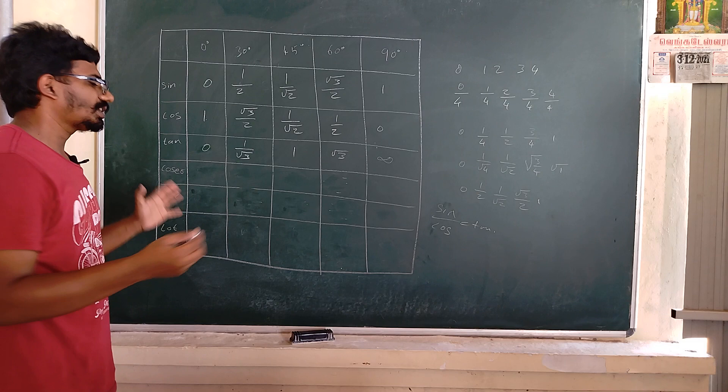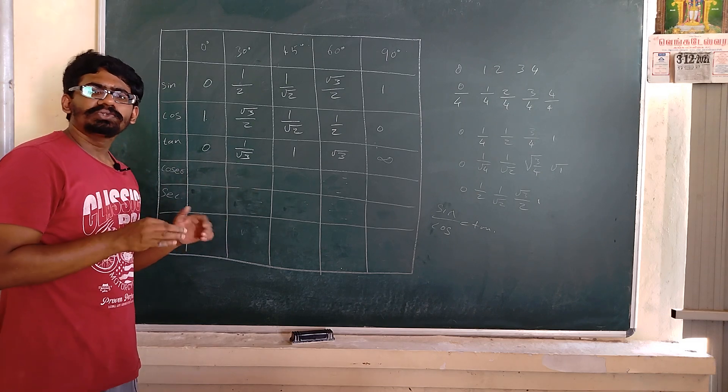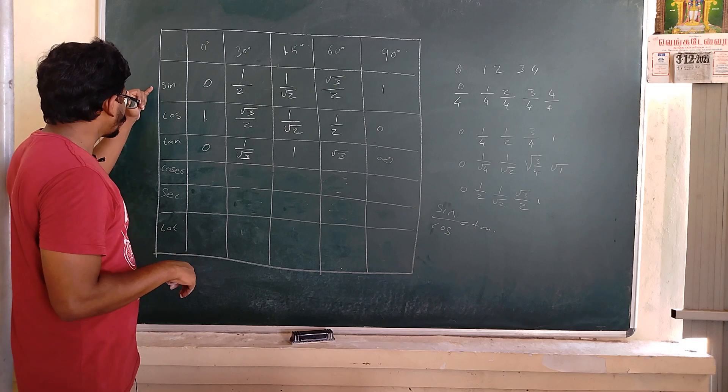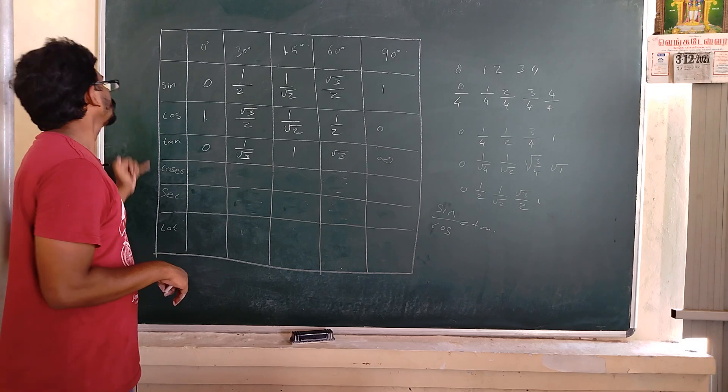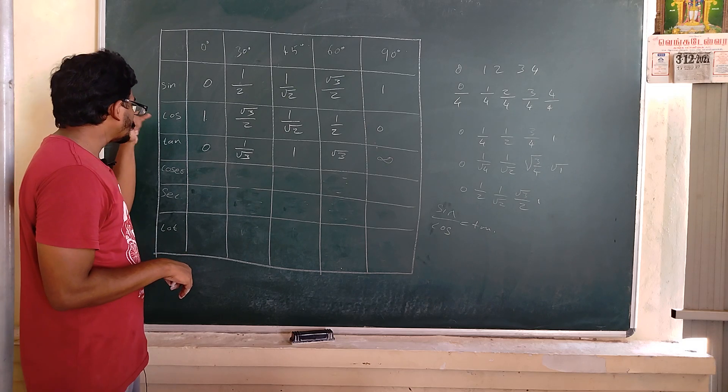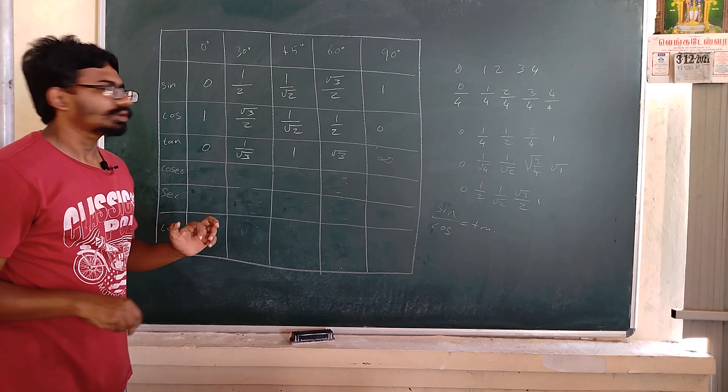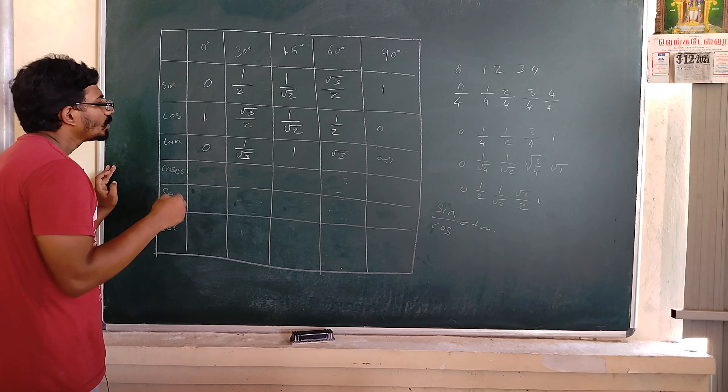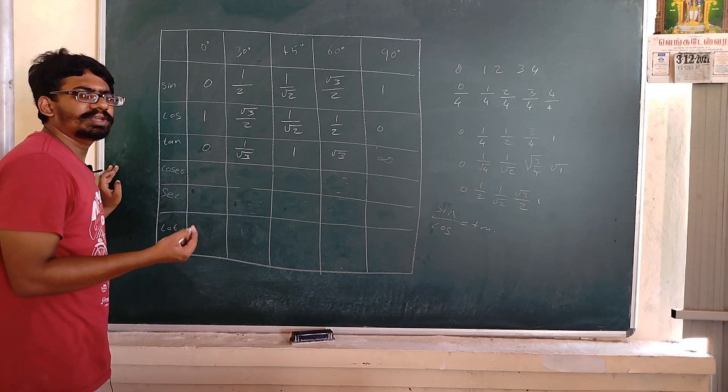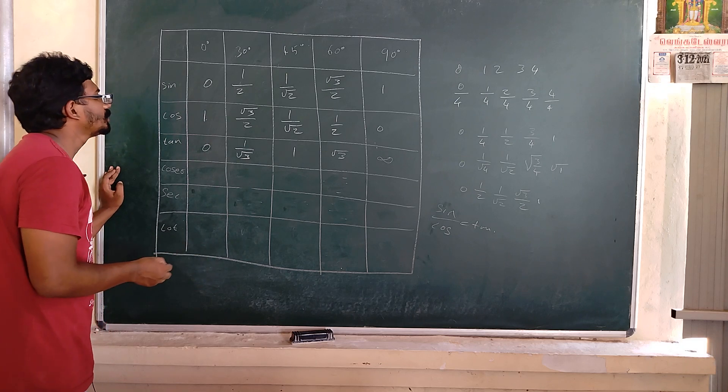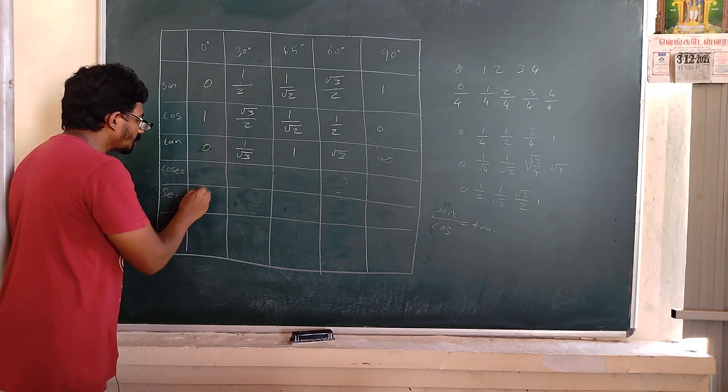With finding tan theta or tan values, our bigger task ends here. Now you write the reciprocal for sine as cosecant, reciprocal for cosine as secant, and reciprocal of tan as cot. So 1 divided by 0, the reciprocal, is infinity.